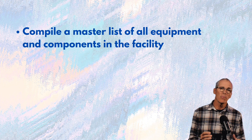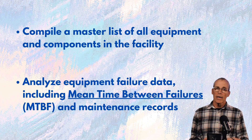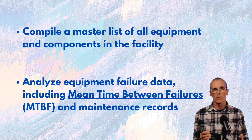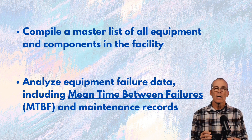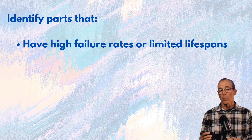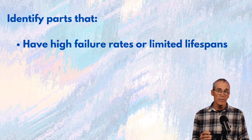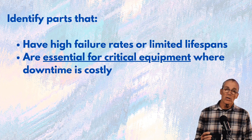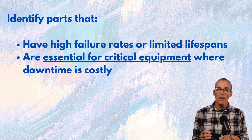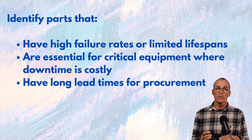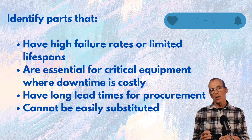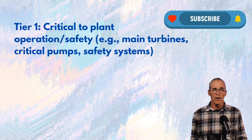We'll get a master list of all our components and all of our equipment in the facility, and then we're going to analyze the failure data, such as the mean time between failures and maintenance records. What we're going to look for are equipment that has high failure rates or limited lifespans, or if they're essential for critical equipment that could cause unit downtime. We'll also look at long lead times for procurement and parts that can't easily be substituted.